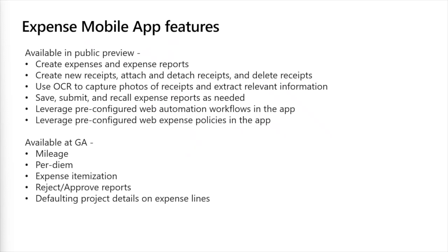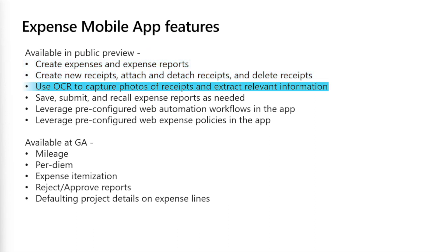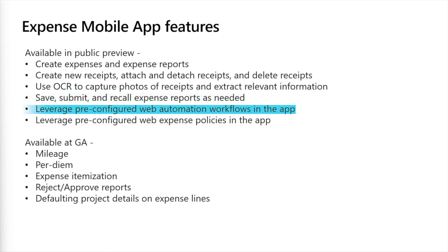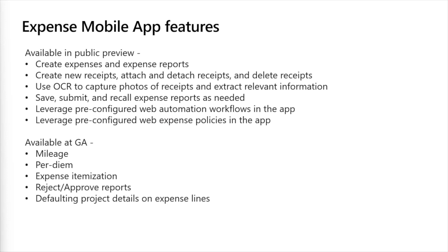The app includes a variety of features to make expense reporting as seamless as possible, such as the ability to create expenses and expense reports, OCR receipt pictures, and attach existing receipts. It also includes the ability to save, submit, and recall expense reports, leveraging pre-configured workflow to streamline the entire process. The app allows teams to leverage pre-configured expense policies for compliance and oversight — for example, requiring a receipt for expenses beyond a certain amount. These policies currently work on the web application and now will also work on the mobile app.